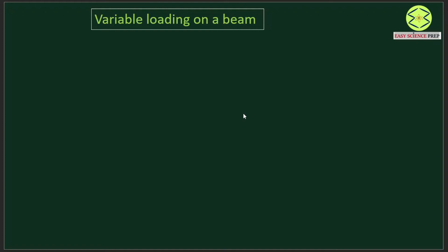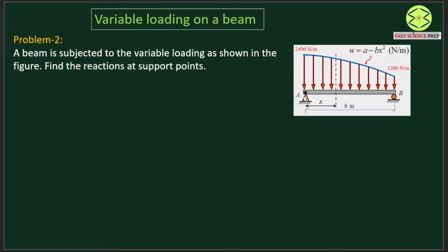Today we would like to solve a problem based on variable loading on a beam. There is a beam AB which is hinge-supported at point A and roller-supported at point B, subjected to a variable loading of intensity W equals A minus Bx squared newtons per meter. We have to find the support reactions for this beam. At point A the load intensity is 2400 newtons per meter, while at point B it is 1200 newtons per meter.